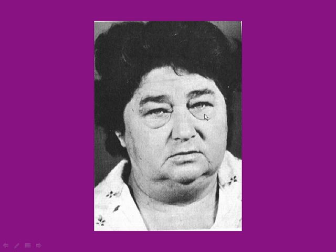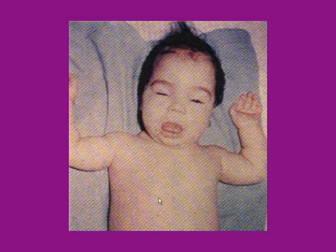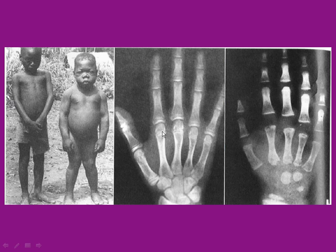This is an example of myxedema — puffiness around the eyes, and actually puffiness everywhere. And here's cretinism: a lot of times the tongue protrudes and they're a little thicker. Here's a child with cretinism versus one without — a little bit thicker in weight, face is a little puffy, and if you gave him a mental exam, his IQ is probably lower than normal.